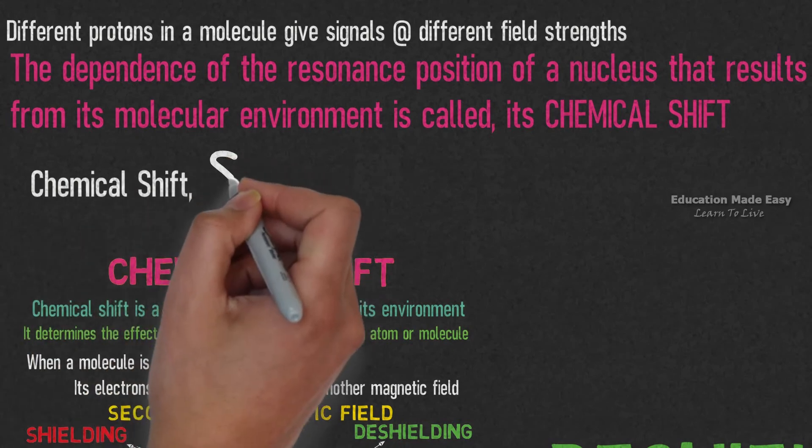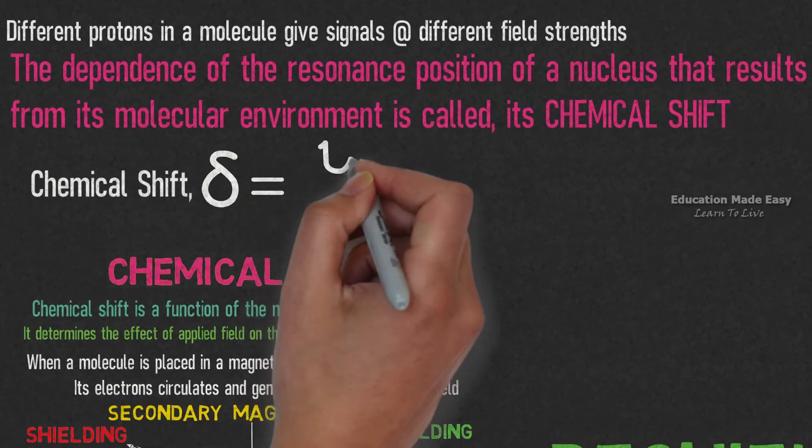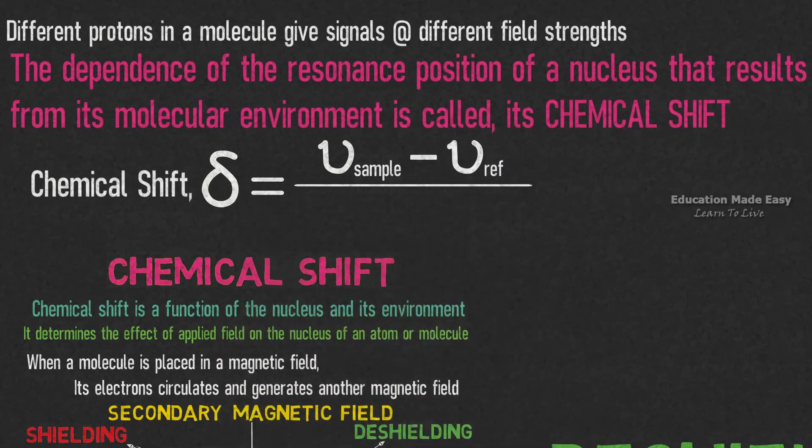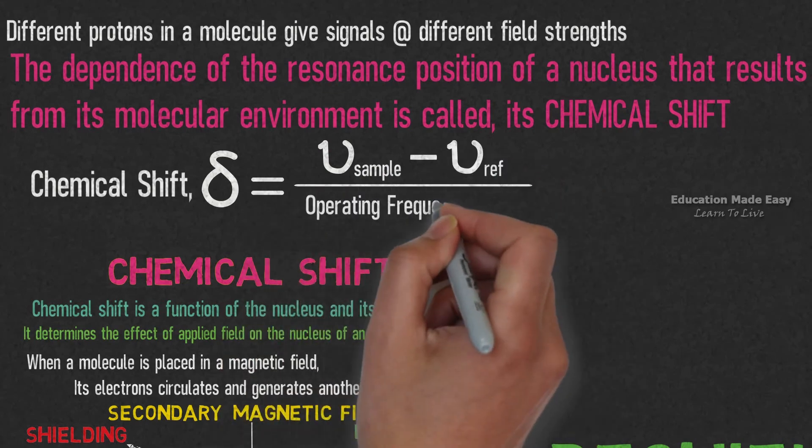Chemical shift, denoted by small delta, is equal to mu sample minus mu reference divided by operating frequency in megahertz.